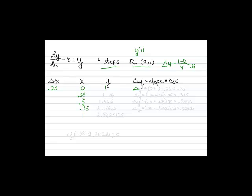We need to calculate delta y in each case. It's our slope times our delta x, and delta x will always be 0.25, so all we have to do is calculate our slope using our differential equation. Our slope is 0 plus 1, because it's x plus y, multiplied by 0.25, giving us a delta y of 0.25. Adding that to our y value of 1, we get a new y value of 1.25.